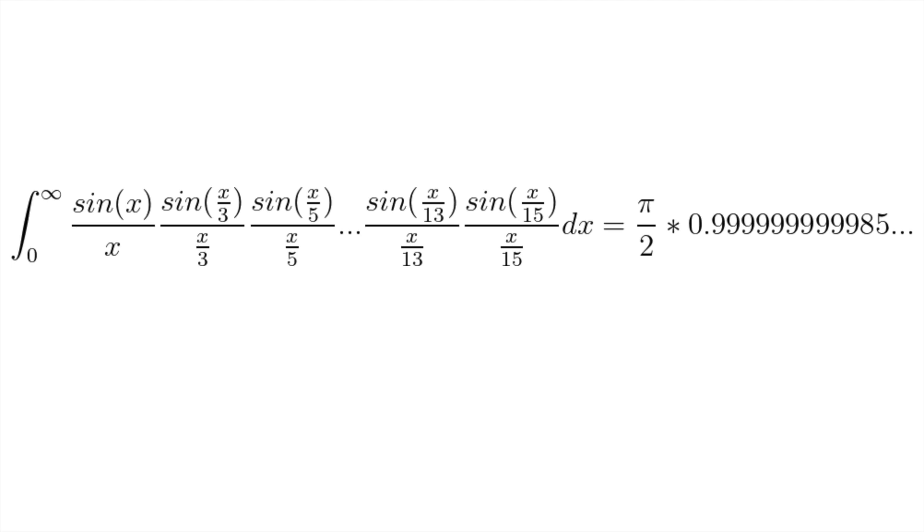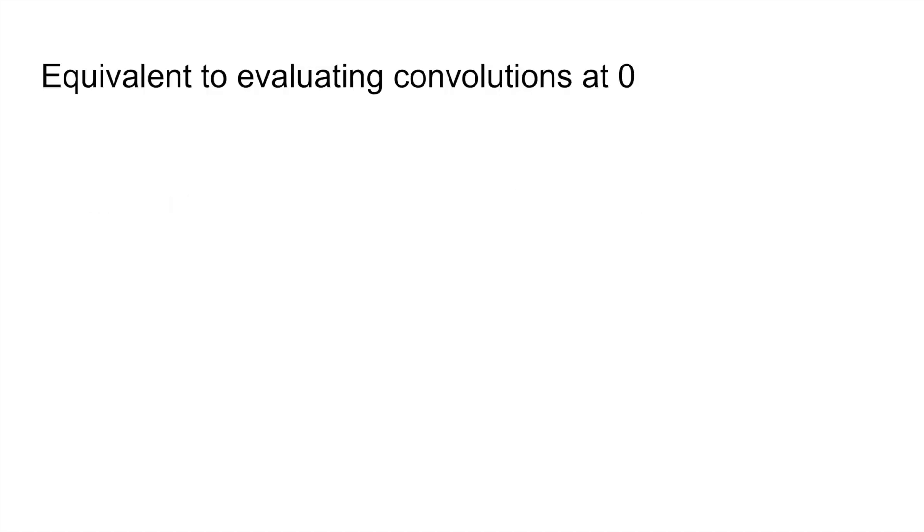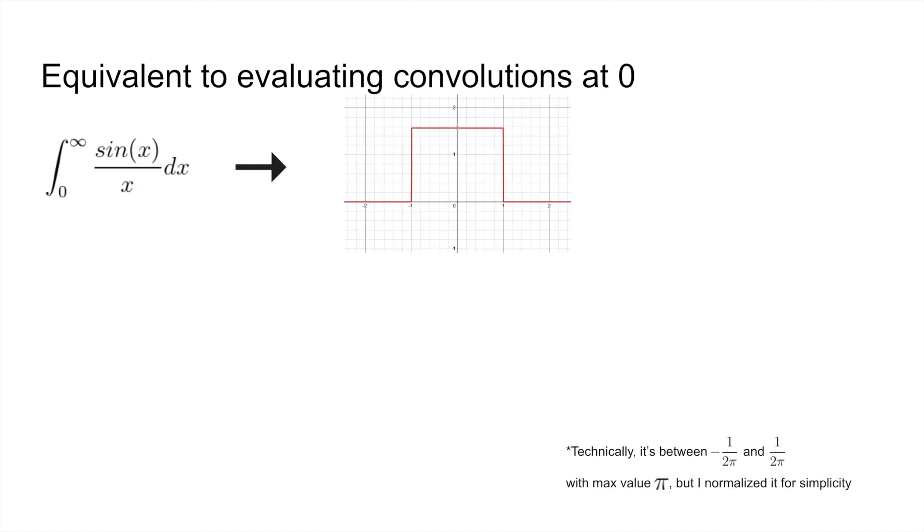Well, it turns out that we can represent the integrals in the sequence in terms of something called a convolution evaluated at 0. Now for our first integral, sin(x)/x, the convolution is equal to π/2 for all numbers in the interval between negative 1 and 1. And so if we evaluate at 0, we'll get π/2. But each time we add another term, the outer edges of our convolution decrease slightly.